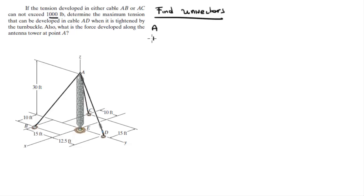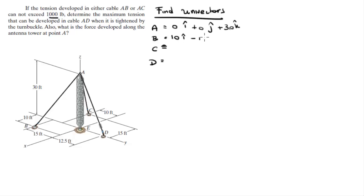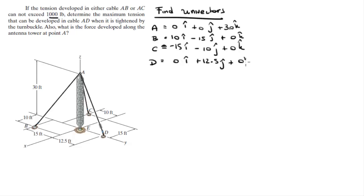To find the unit vectors, you need to find all the points involved and where they sit. A sits at (0i + 0j + 30k), B sits at (10i − 15j + 0k), C sits at (−15i − 10j + 0k), and D sits at (0i + 12.5j + 0k).